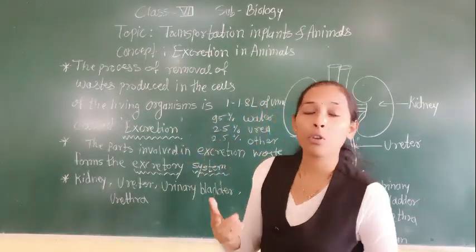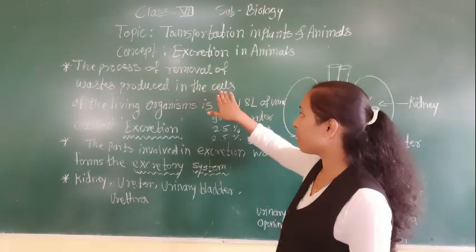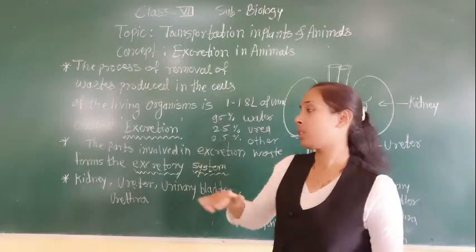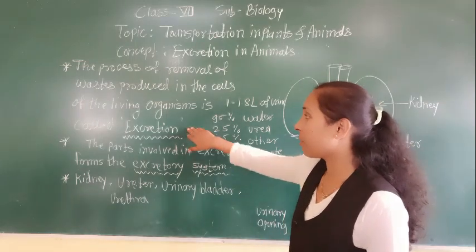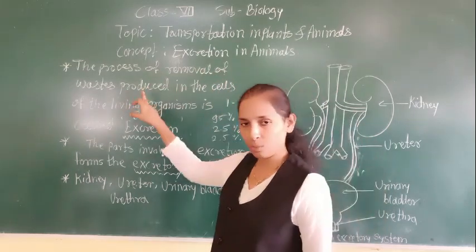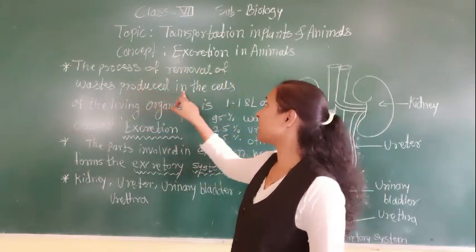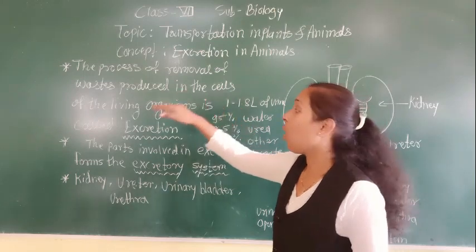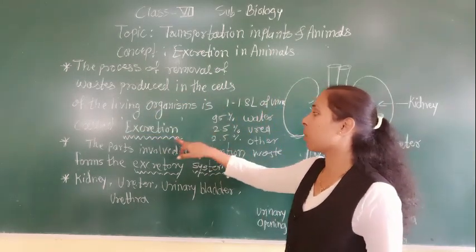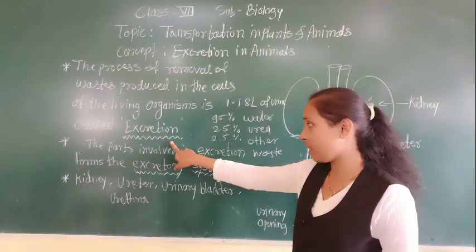The throwing out of waste products which are formed due to the different functions of the cell — that process is called excretion. The process of removal of waste products in the cells of the living organism is called excretion.